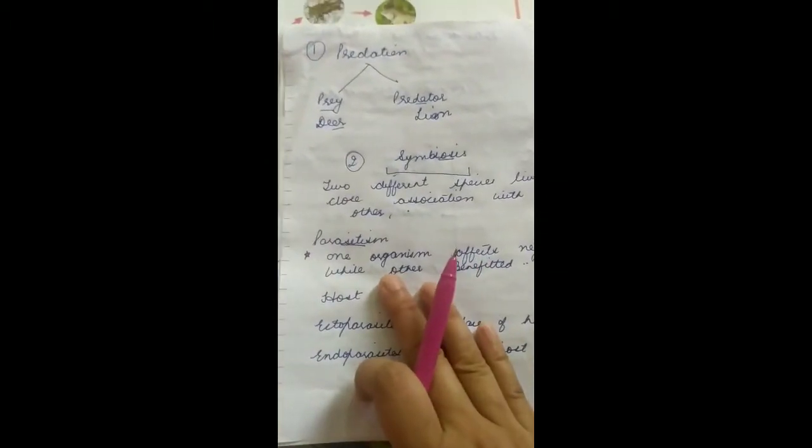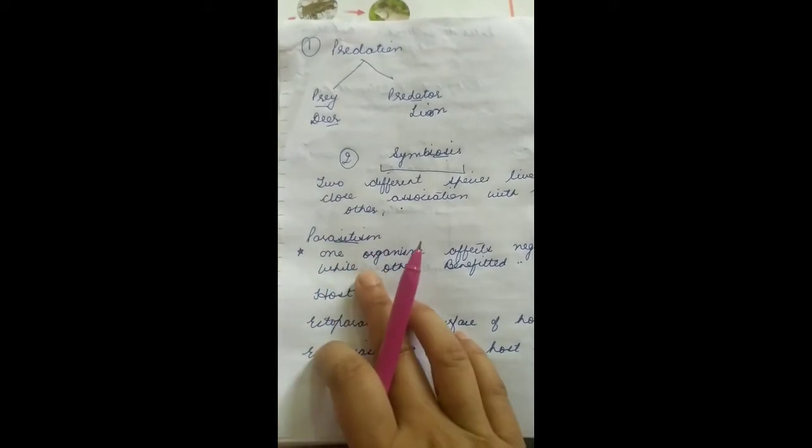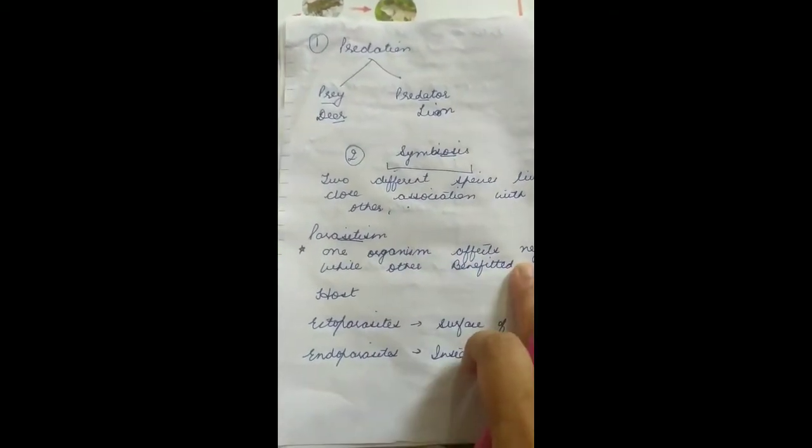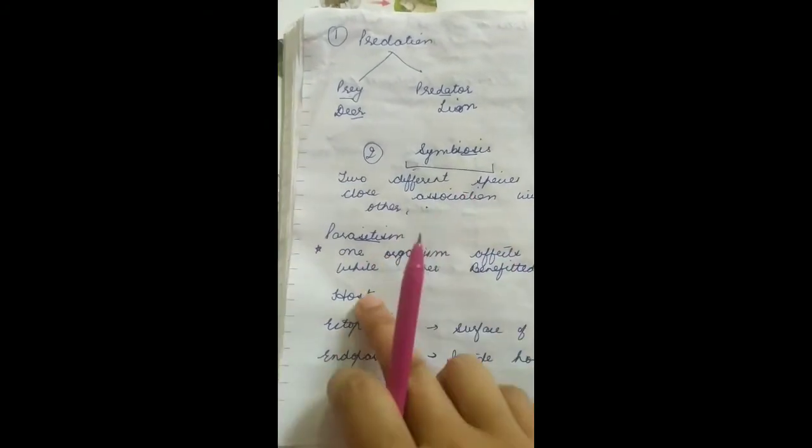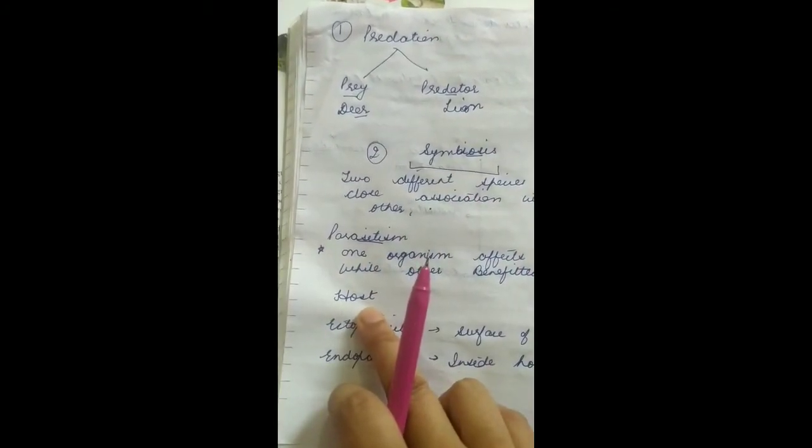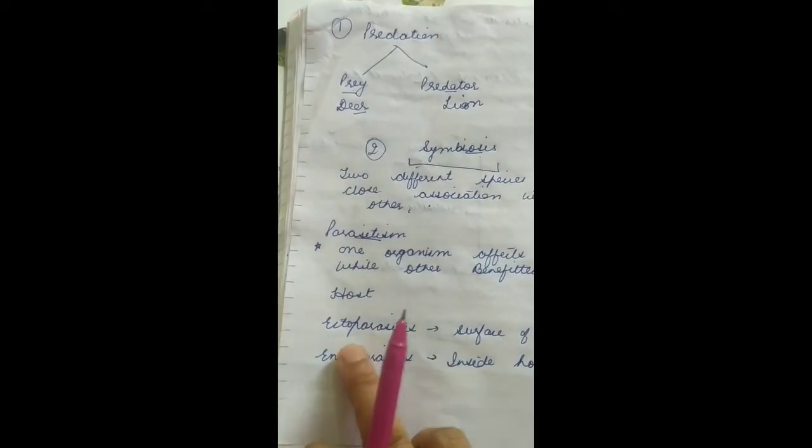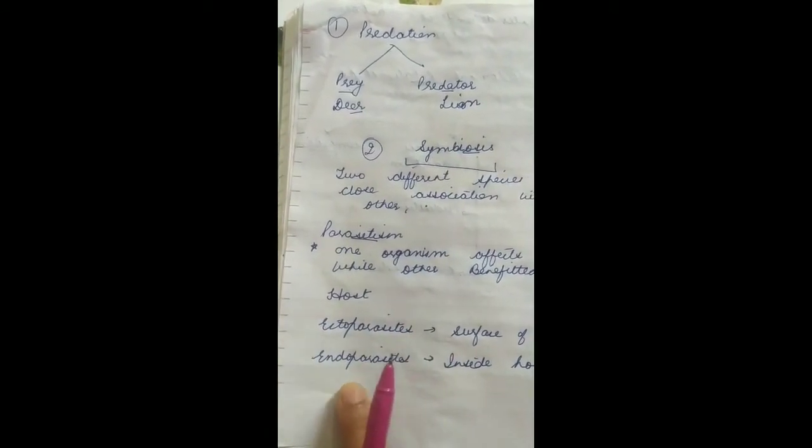So what is parasitism? Parasites, you know this term. One organism is affected negatively while the other is benefited. In parasitism, one host is there where the parasite usually lives, and there are two types of parasites: ectoparasites and endoparasites.